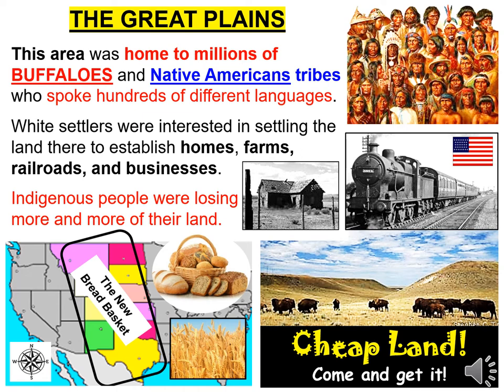Native Americans were able to survive in this area called the Great Plains because of the buffalo. Millions of buffaloes roamed this flat area referred to as the new breadbasket. So you have indigenous people in this area, buffaloes in this area, but white settlers are moving in because they want to create homes, start farms, have the railroad come through to connect east to west. This is causing conflict between the indigenous people and the American settlers moving into the Great Plains.